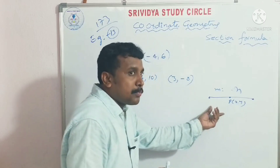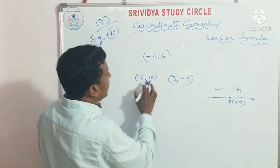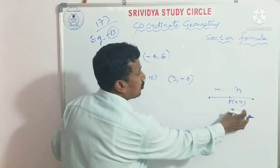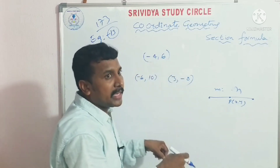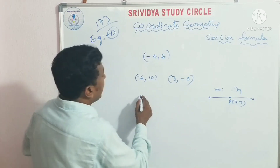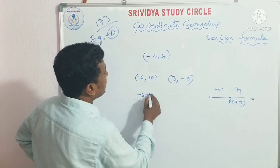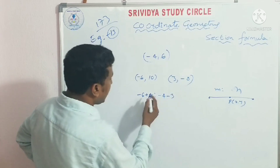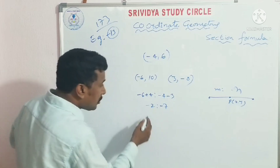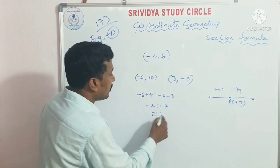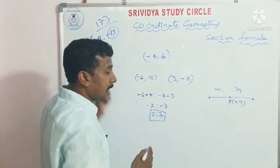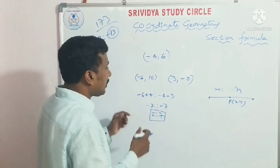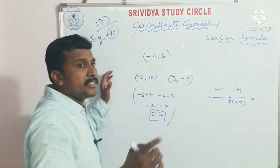If you look at P(x, y), with coordinates x1, y1 and x2, y2 — the formula is clear. The direct answer is: x1 minus x is to x minus x2. Formula gives minus 7, and the answer is equal to 2 is to 7. The section formula is: m·x2 plus n·x1, divided by m plus n.